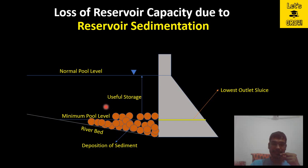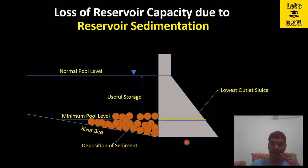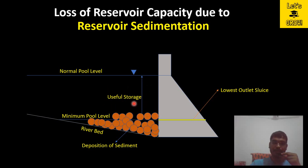There is one more problem with sediments. Whenever these sediments occupy the volume of useful storage, suppose there is a hydropower plant and its intake is provided in that zone — along with water, sediment particles will also enter the hydropower plant. The blades of the turbine may suffer wear and tear due to these sediment particles, leading to serious damage to the turbine and problems in the operation of the hydropower plant.